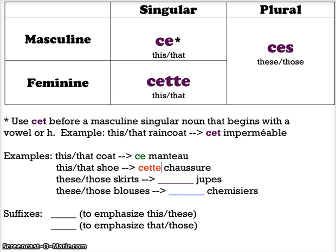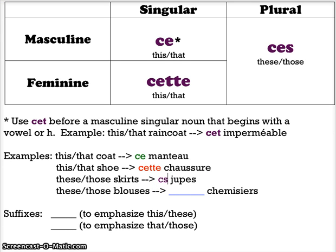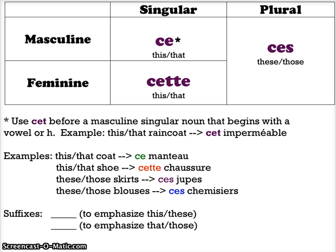Now let's do some plurals. I want to say these or those skirts. Skirts are feminine plural, but since it's plural I don't have to worry about masculine or feminine — it's going to be ces. Ces jupes: these or those skirts. Likewise, for these or those blouses, I don't have to know if it's masculine or feminine. It happens to be masculine, but it wouldn't matter because it's plural. So I would use ces — ces chemisiers: these or those blouses.